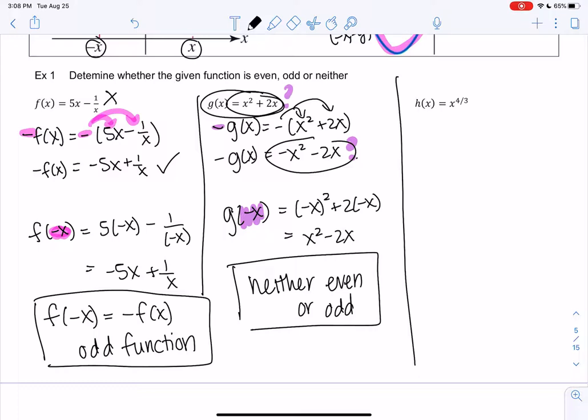We'll try one more and then we can actually look at the graph as well. So negative h of x. On this one, it's just negative x to the 4/3. So let's see what happens when we plug in negative x. So make sure you use parentheses when you plug in. And we're going to have to review some power rules.